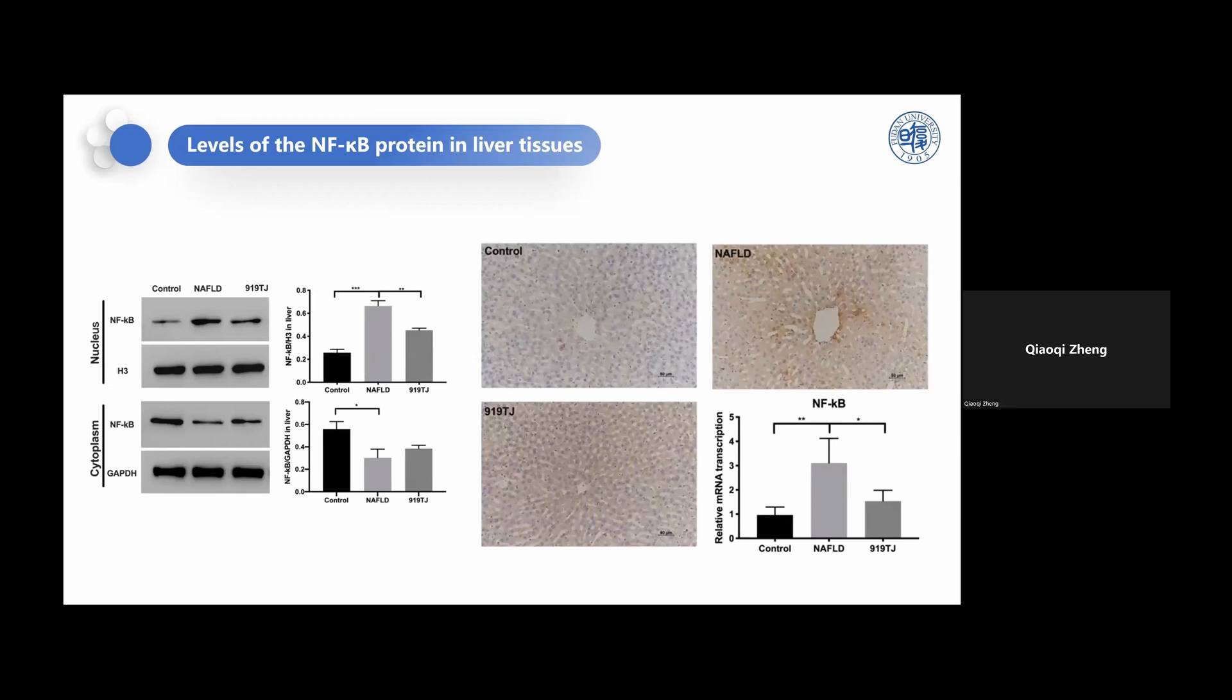Next, we verified the regulatory effect of 919 syrup on NF-κB at the protein level and histological level. Western blotting showed that the levels of NF-κB protein in the nucleus of liver cells were higher in the model group than control, and our 919 syrup could reduce expression in the nucleus compared with the model rats. The results of IHC staining were the same.